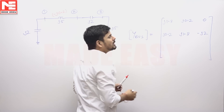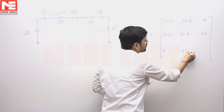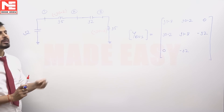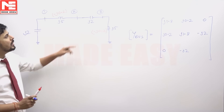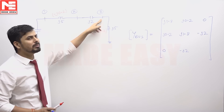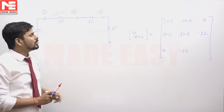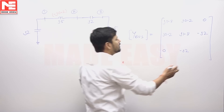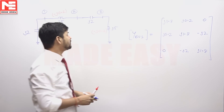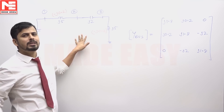Using symmetry, y31 will be 0, y32 will be minus j2, and the third diagonal entry y33 is the sum of admittances connected at bus number 3. Adding j2, minus j2, and minus j0.2 gives j1.8. This completes the 3×3 Y-bus matrix for this 3-bus system.